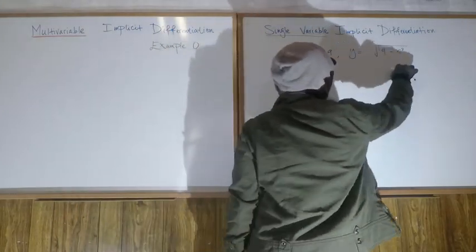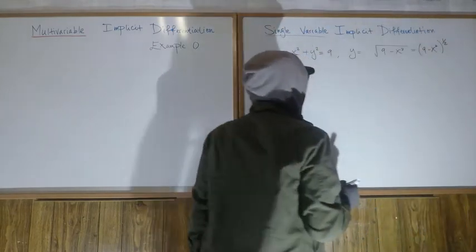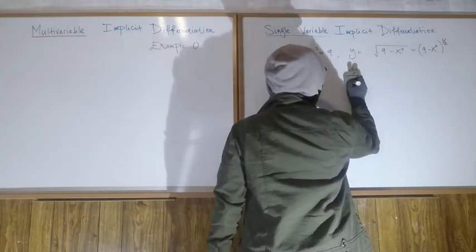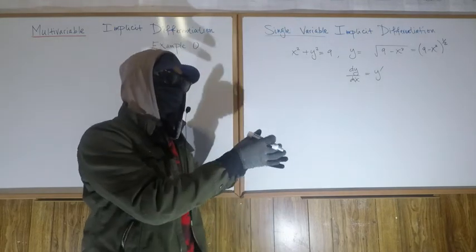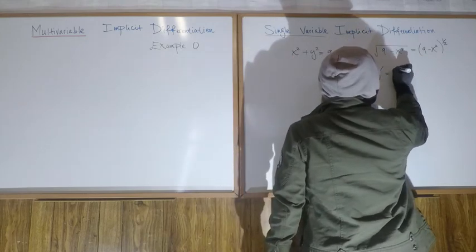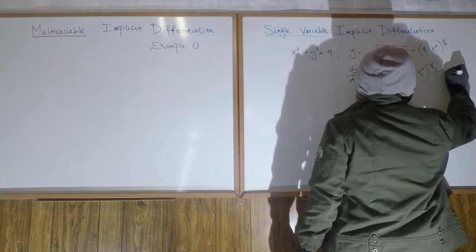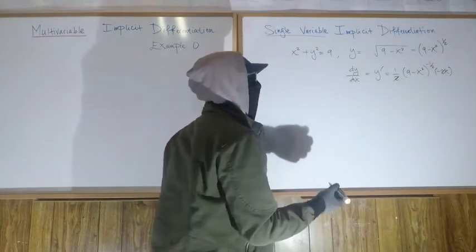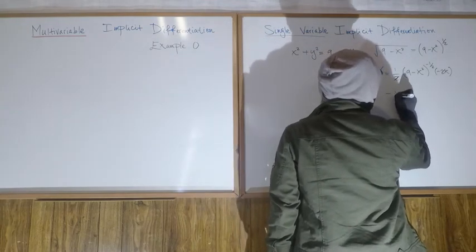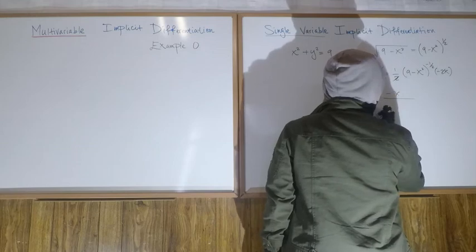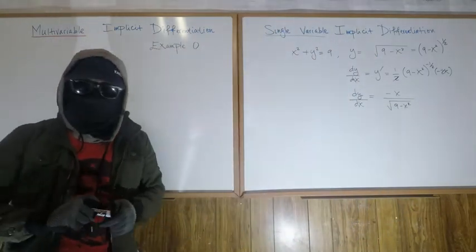If we want to find dy/dx now that we've got y as an explicit function — y equals stuff in terms of x — we can just take the derivative the usual way. We write nine minus x squared to the one-half power, so dy/dx equals one-half times (nine minus x squared) to the negative one-half, times negative two x. The two's cancel, and dy/dx equals negative x over the square root of nine minus x squared.